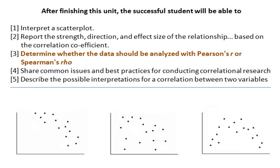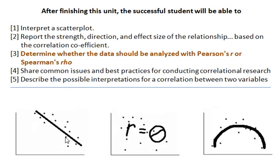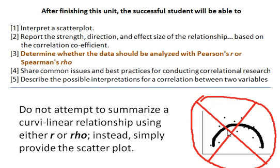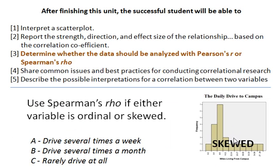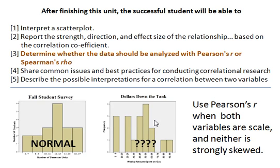Our third learning objective is to determine whether data should be analyzed using Pearson's R or Spearman's Rho. Here are some examples of scatter plots: this is linear, this is like a zero correlation, and this is curvilinear. If you see a curvilinear correlation, do not analyze it with either Pearson's R or Spearman's Rho — simply report the scatter plot, as they are not set up to analyze it correctly. Before analyzing the data, look at each of your variables to see how they're distributed — normal, regular, or strongly skewed. If a variable is strongly skewed, or if the variable is ordinal, then you will have to use Spearman's Rho. If either one is strongly skewed or ordinal, it's Spearman's Rho. On the other hand, if both variables are scale (equal intervals) and the variables are normal or at least not strongly skewed, then Pearson's R is the way to go.